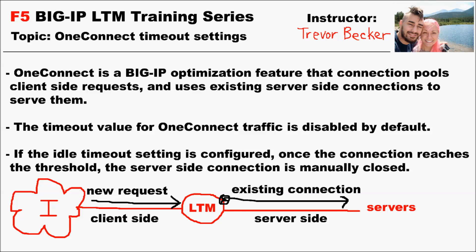The timeout value for a OneConnect profile is disabled by default. What this means is that the BigIP platform does not tear down server-side connections due to inactivity. It relies on other protocol profile timeout values to reap those connections.